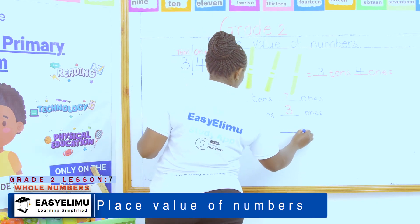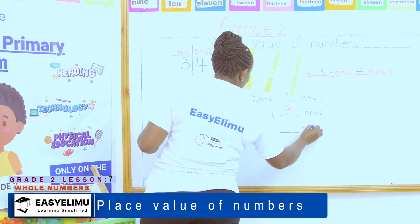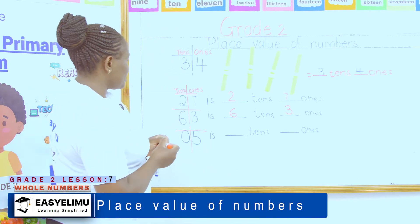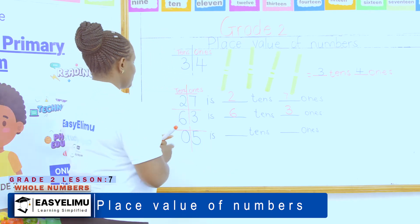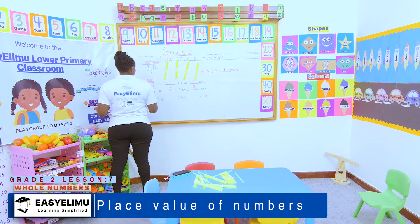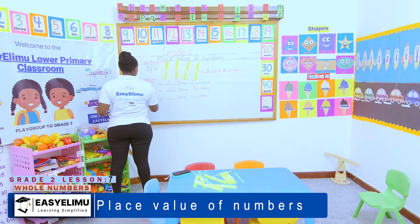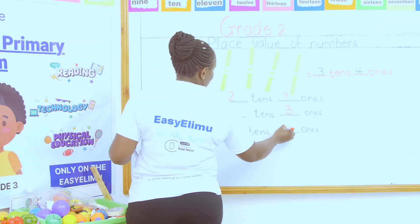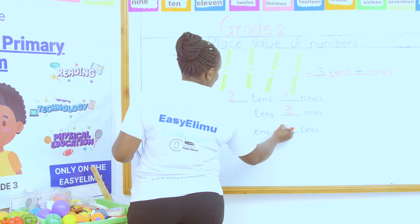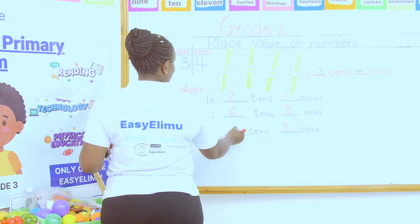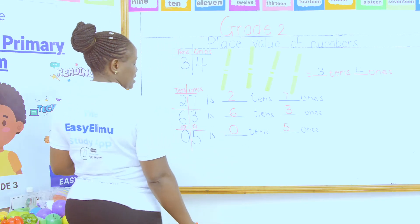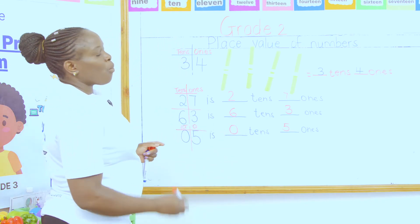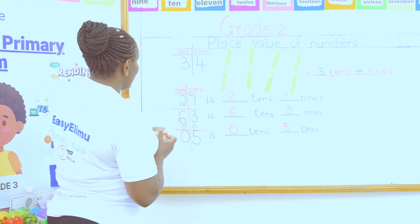Using the place value chart, five is in the ones place value and zero is in the tens place value. So how many ones do we have? We have five ones. And we have zero tens.